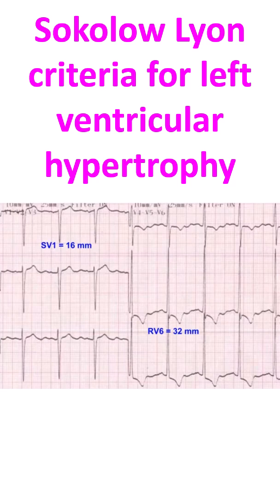Sokolov-Lyand criteria is one of the most popular voltage criteria for detection of left ventricular hypertrophy. In this ECG, we can see chest leads V1 to V6. S-Wave in V1 is 16 mm and the R-Wave in V6 is 32 mm. You can see ST depression in V5 and V6 along with T-Wave inversion in V4, V5 and V6. These are features of left ventricular hypertrophy.